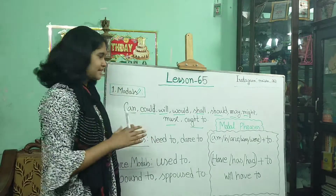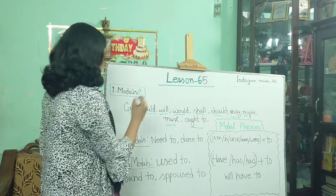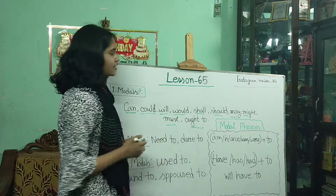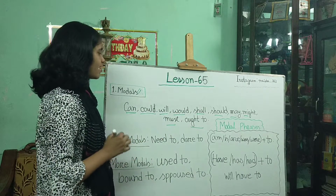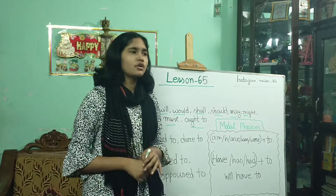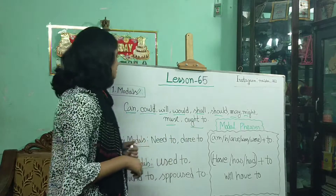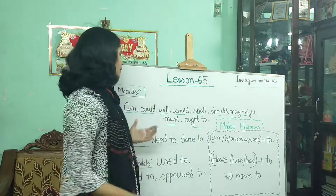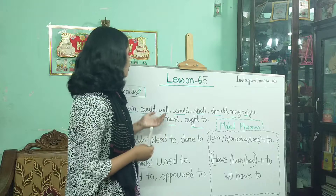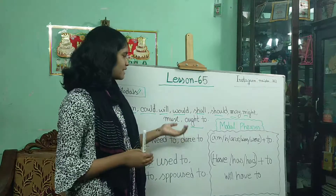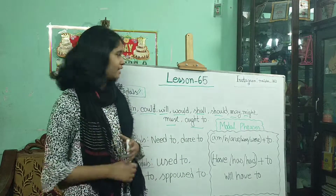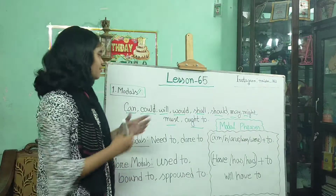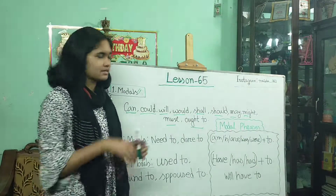First of all, modals as we understand — can, could, will, would, shall, should, may, might, must, or 'to'. We can make sentences like: Can I borrow your pen? Could you help me please? Will you help me please? Would you go with me? Or shall I do that? So many things you can use in making sentences.